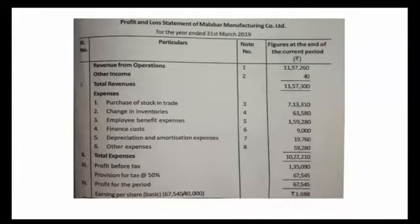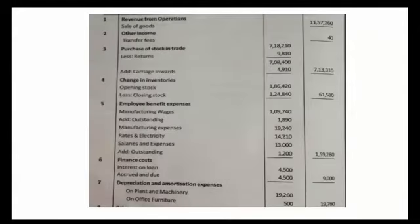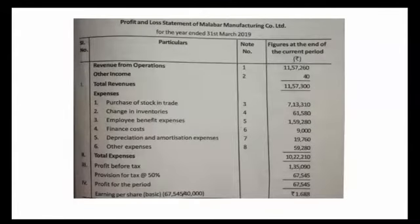Revenue from operations: 11,57,260. Under other income, we have one item to prepare. Other income — credit and transfer fee — amount is 40,000. It is another income. Then total revenue is 11,57,300.